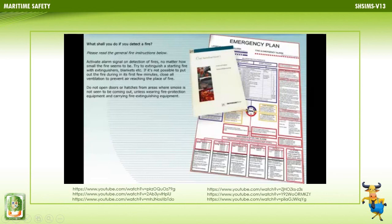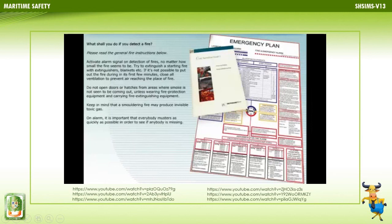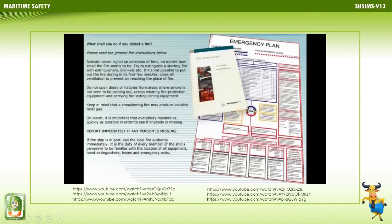Keep in mind that a smoldering fire may produce invisible toxic gas. On alarm, it is important that everybody musters as quickly as possible to check if anybody is missing. Report immediately if any person is missing. If the ship is in port, call the local fire authority immediately. Every member of ship's personnel must be familiar with the location of all equipment, extinguishers, hoses, and emergency exits.